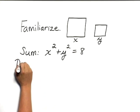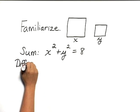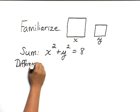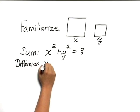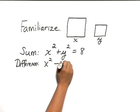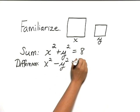We're also told that the difference of their areas is 2. So we can translate that as x squared minus y squared equals 2.